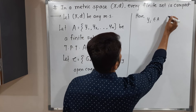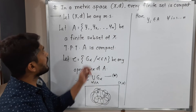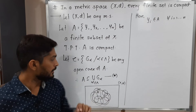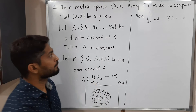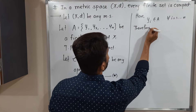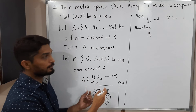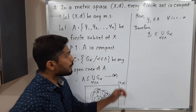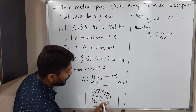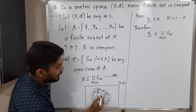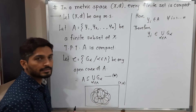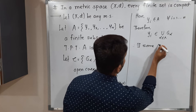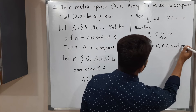Since y_i belongs to A for all i from 1 to n, and A is a subset of the union, we get that y_i belongs to the union of G_alpha over alpha in lambda. So y_i belongs to at least one open set of this collection. Therefore, there exists some alpha_i in lambda such that y_i belongs to G_{alpha_i}.